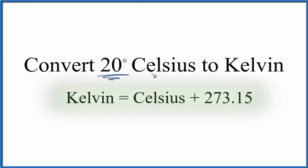Let's convert 20 degrees Celsius to Kelvin. We're going to use this equation: Kelvin = Celsius + 273.15. This is a good equation to memorize because if you're given Kelvin you can convert to Celsius, or if you're given Celsius you can convert to Kelvin using this equation. We're trying to find Kelvin here.